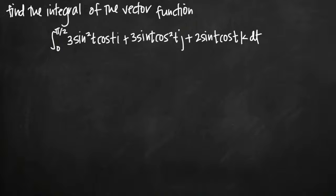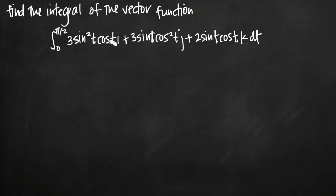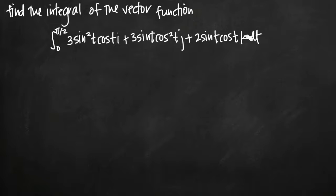Today we're going to be talking about how to find the integral of a vector function. In this particular problem we've been asked to take the integral of 3 sine squared t cosine t times i, plus 3 sine t cosine squared t times j, plus 2 sine t cosine t times k. We've been asked to evaluate this integral on the interval 0 to pi over 2, so we've got a definite integral here.